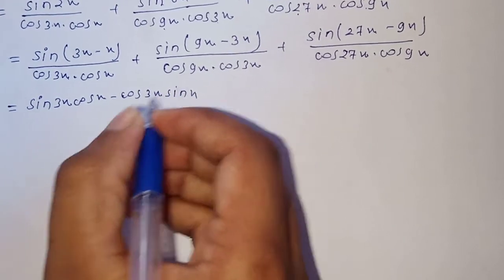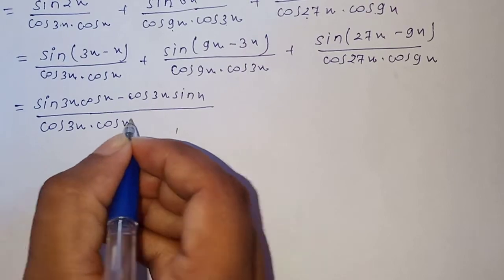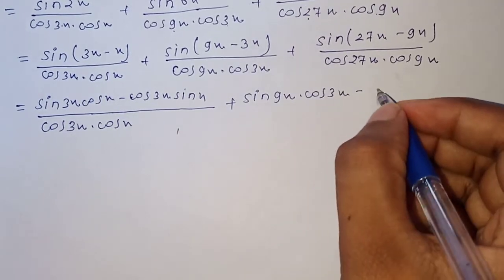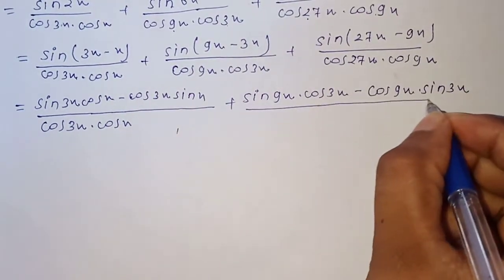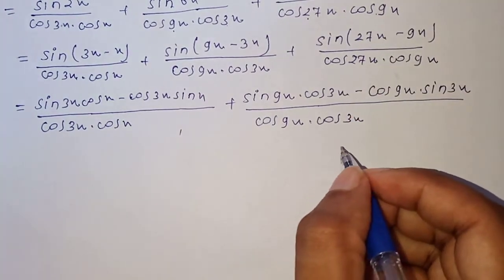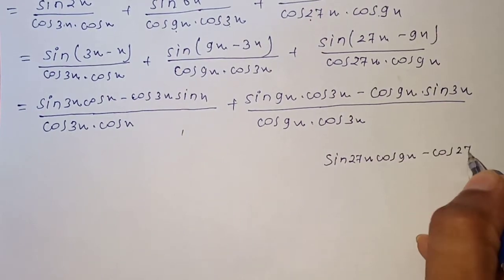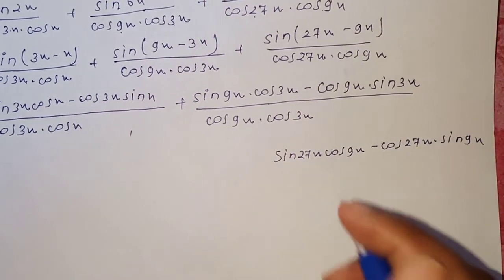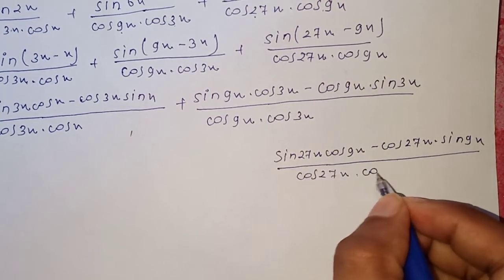Applying the formula sin(A - B) = sin(A)cos(B) - cos(A)sin(B) to each term: the first term expands over cos(3x)·cos(x), the second over cos(9x)·cos(3x), and the third over cos(27x)·cos(9x).